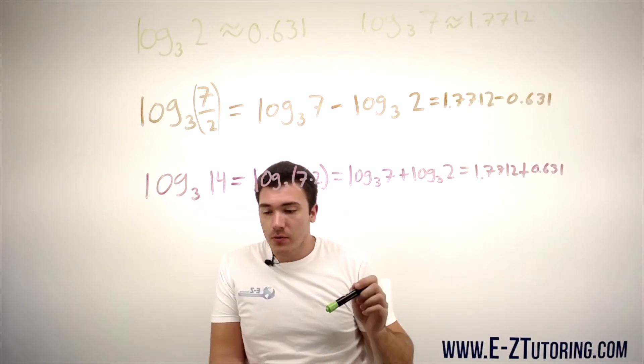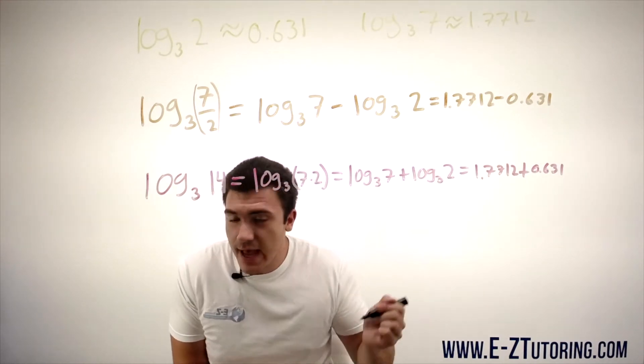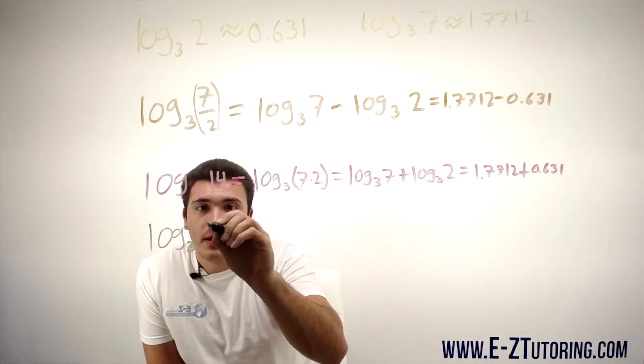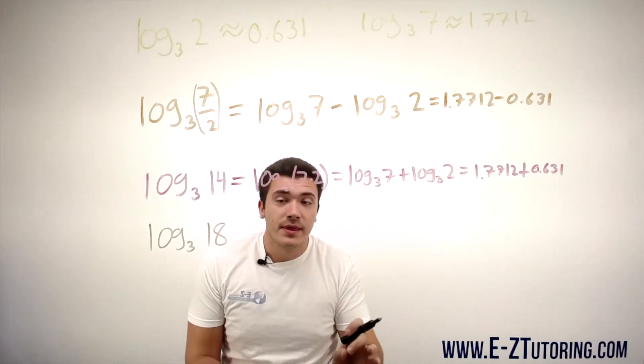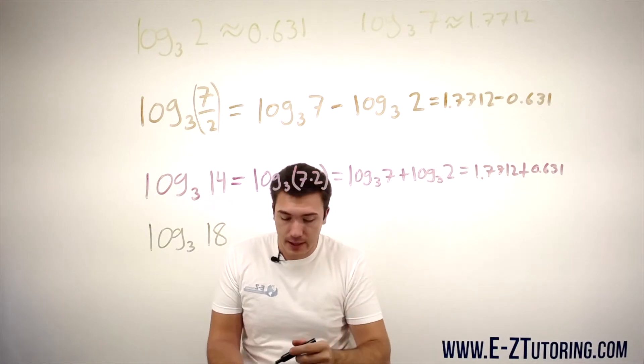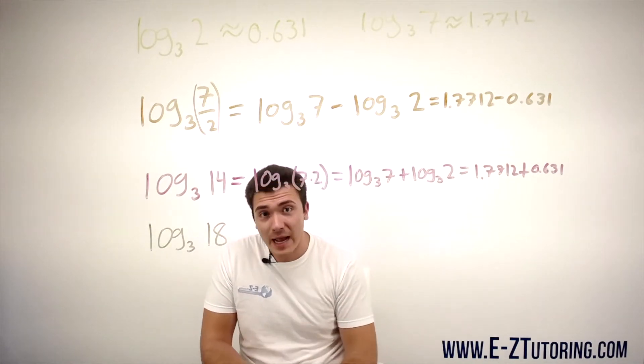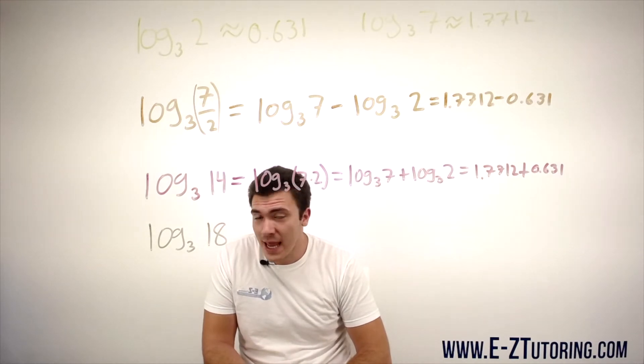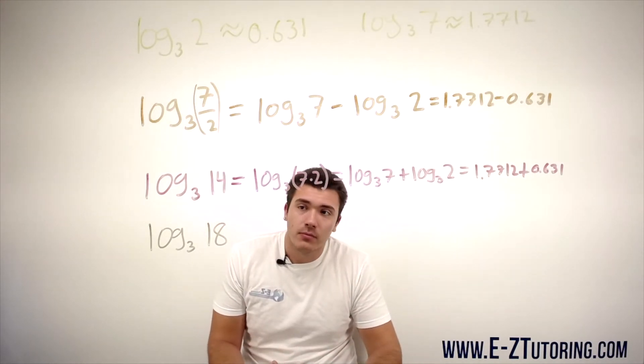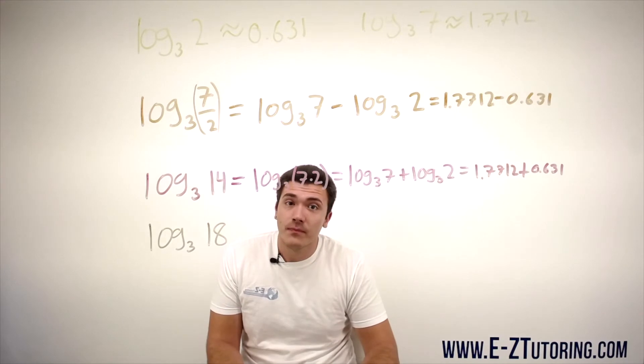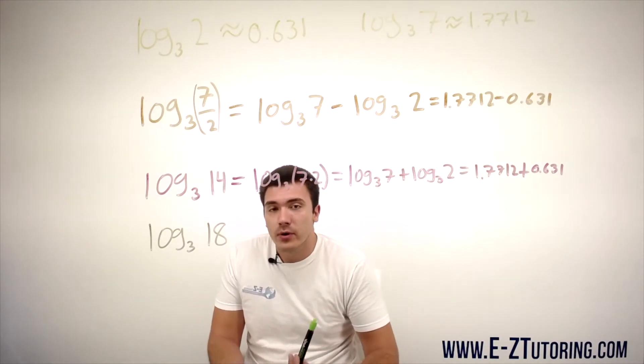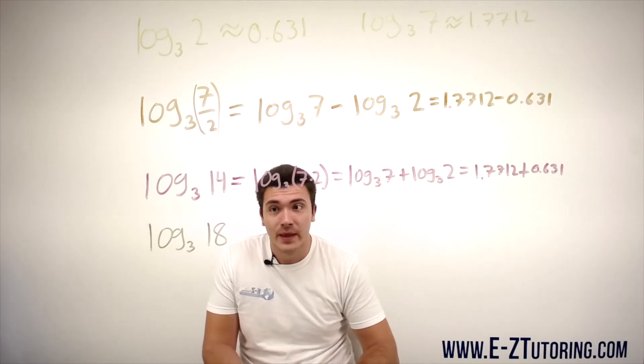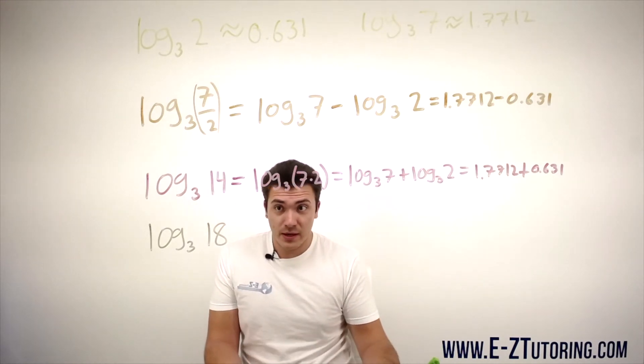Now suppose we now have log base 3 of 18. This is where it gets tricky. Can you combine 7 and 2 to get 18? You can't. I mean yes, you can combine 7 and 2 with addition, but we're not using addition here. We're only using multiplication or division. No way you can combine 7 and 2.